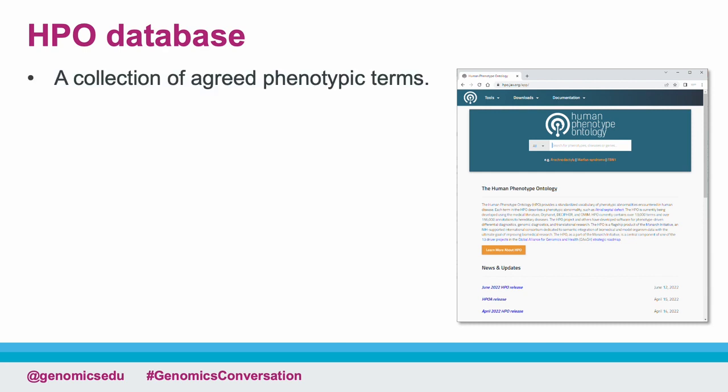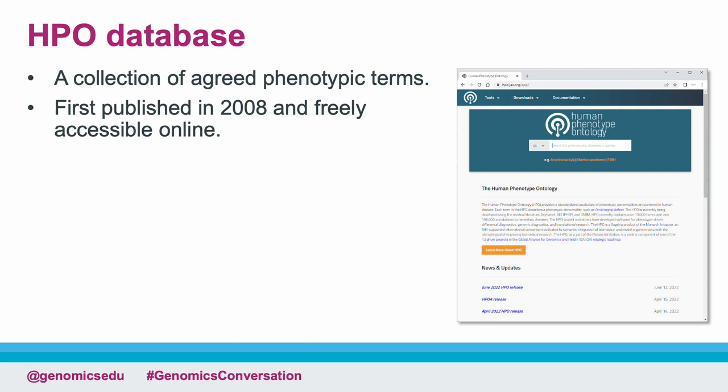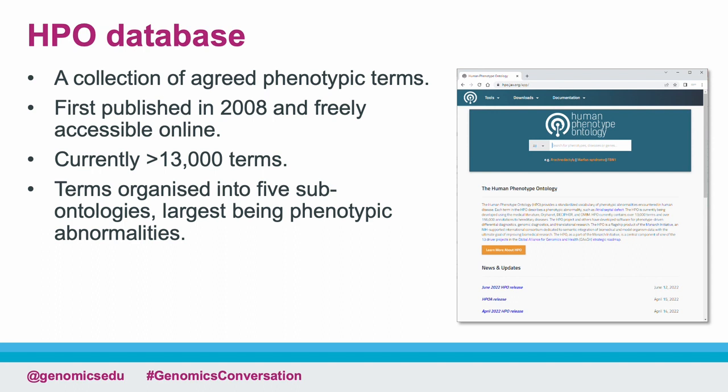It was first published in 2008 to unify the various terms used by clinicians to describe phenotypes and is freely accessible online. It has been adopted across the world and has grown to more than 13,000 terms. The terms are organised into five sub-ontologies.